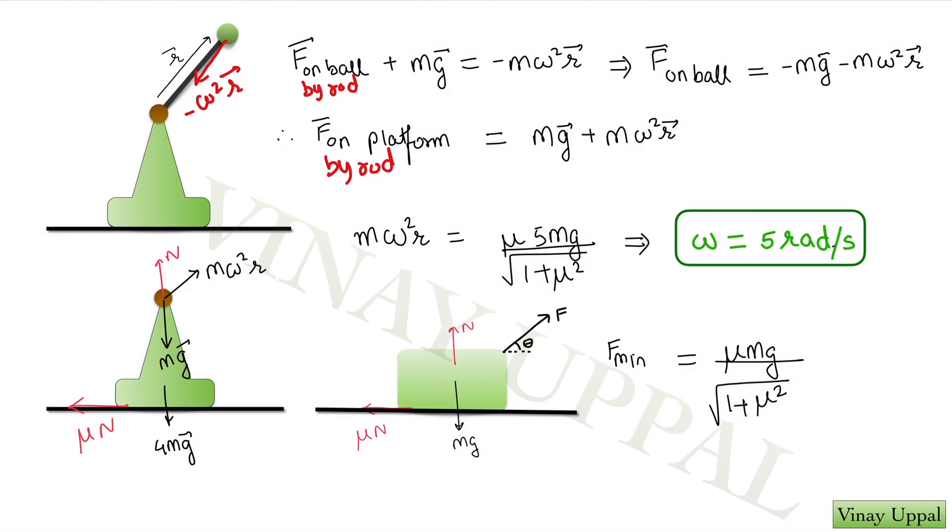Now if I look at the FBD of the entire platform, I have the usual normal force, friction, the weight of the platform and the motor vector 4mg and the force by the rod. The force by the rod has two parts. One is mg vector and the other is m omega square r vector. So r vector is directed away from the motor. So that is why I have shown this direction for m omega square r. So these are the two parts or these are the two components rather of the force by the rod on the platform.